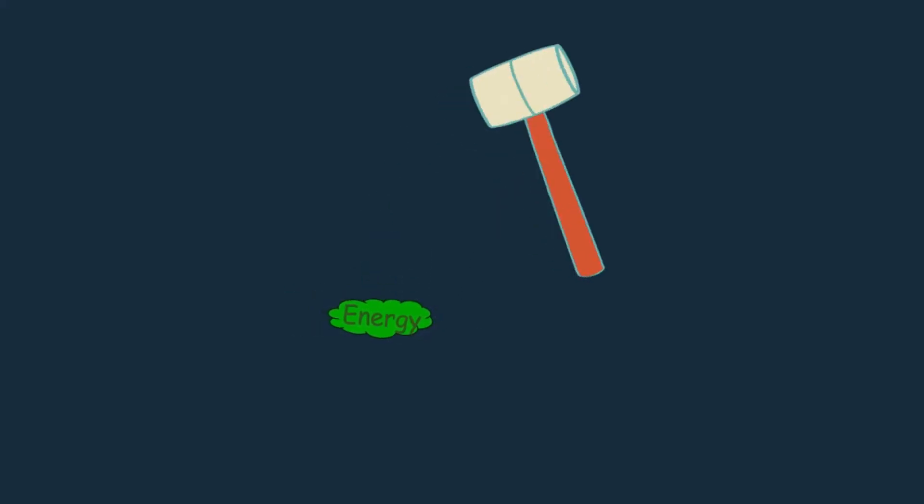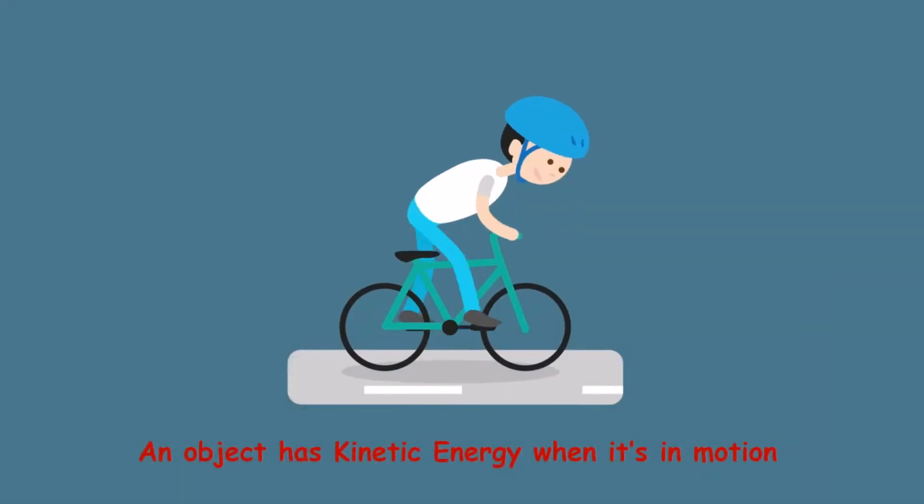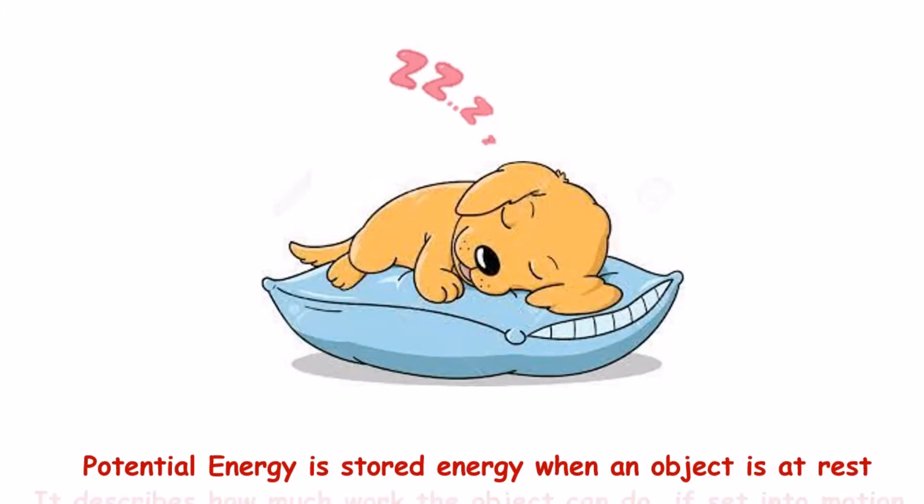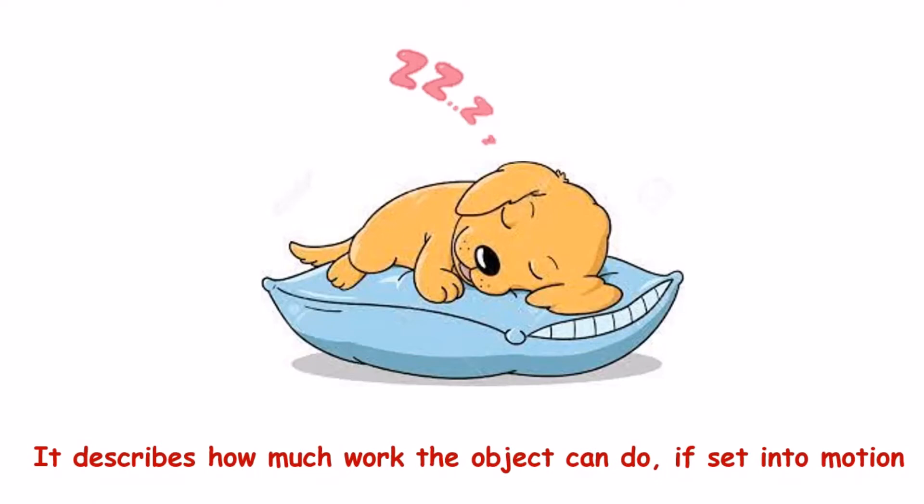It exists in one of two states: kinetic energy or potential energy. An object has kinetic energy when it's in motion. The amount of kinetic energy an object has depends on its mass and speed. Potential energy, on the other hand, is stored energy. When an object is at rest, it describes how much work the object could do if set into motion.